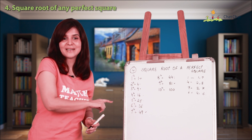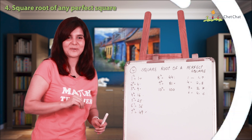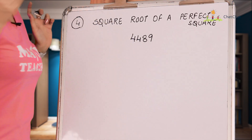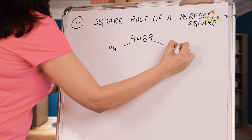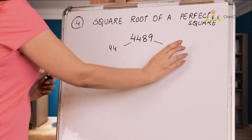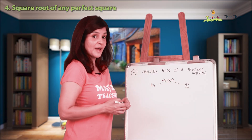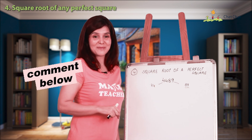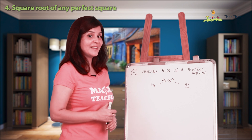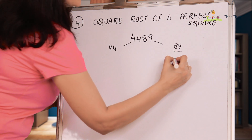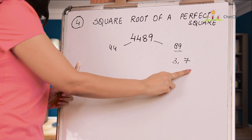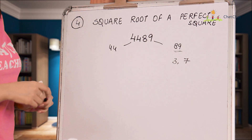Now let's use this pattern. Take the number 4489. Split it into two parts: 44 and 89. Look at 89 — the units digit is 9, so the units digit of the square root must be either 3 or 7. Now look at 44: it lies between 36 and 49, which are 6² and 7². We take the lower number, 6. So the square root of 4489 is either 63 or 67.